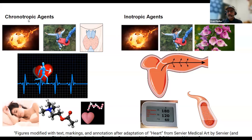Chronotropic agents that increase heart rate include the sympathetic nervous system — fight or flight — adrenaline or epinephrine, and thyroid hormone.